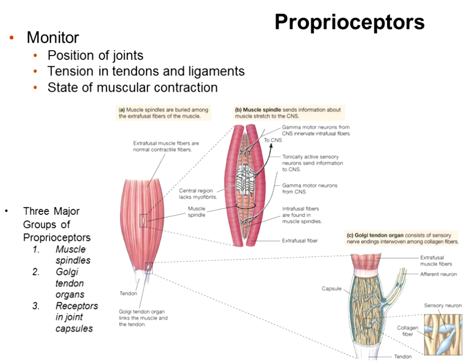Proprioceptors have two main types: the muscle spindle and the Golgi tendon organ. These are the main ways the skeletal muscle system prevents damage to itself during contraction and also provides information on body position and spatial awareness. Other receptors in the joint capsule assist as well. Stretching literature — whether to hold stretches for ten seconds or ninety seconds — exists partly because of which receptor you're trying to trigger: the muscle spindle or the Golgi tendon.